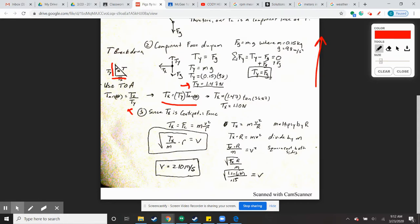If I multiply the Ty by tangent of 36.87, my Tx force is 1.10 newtons.